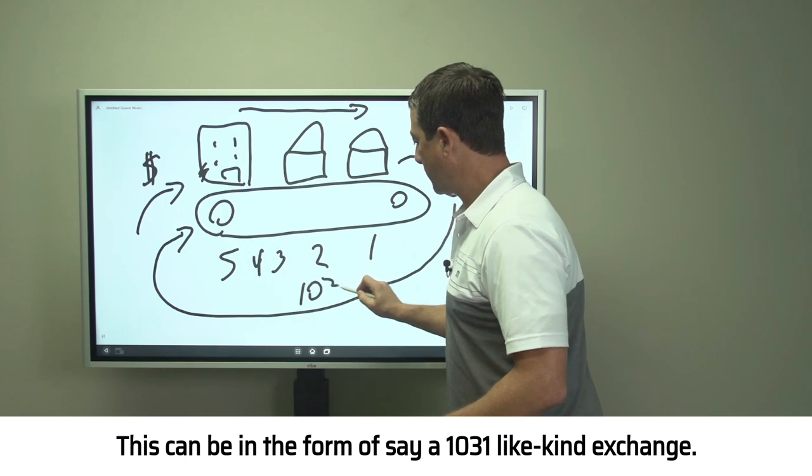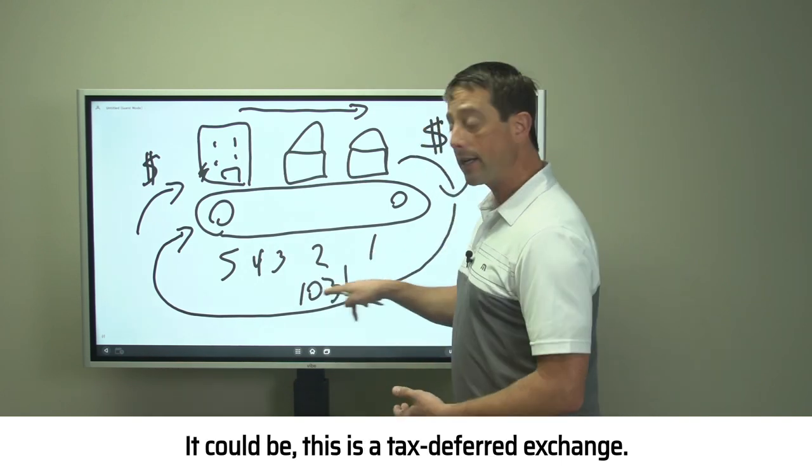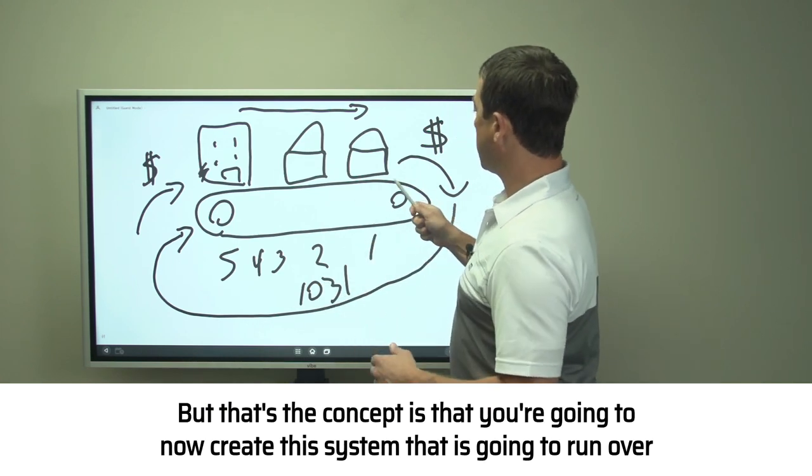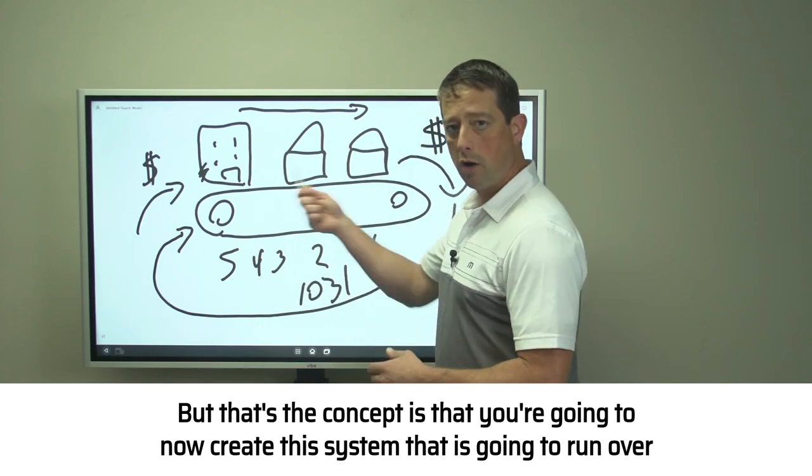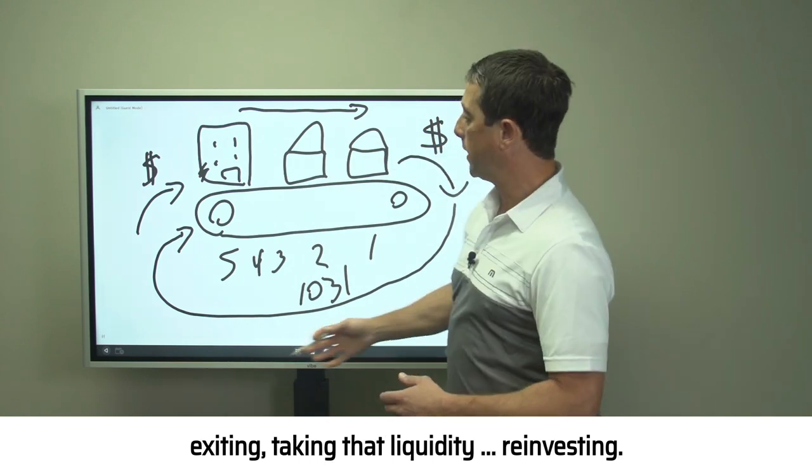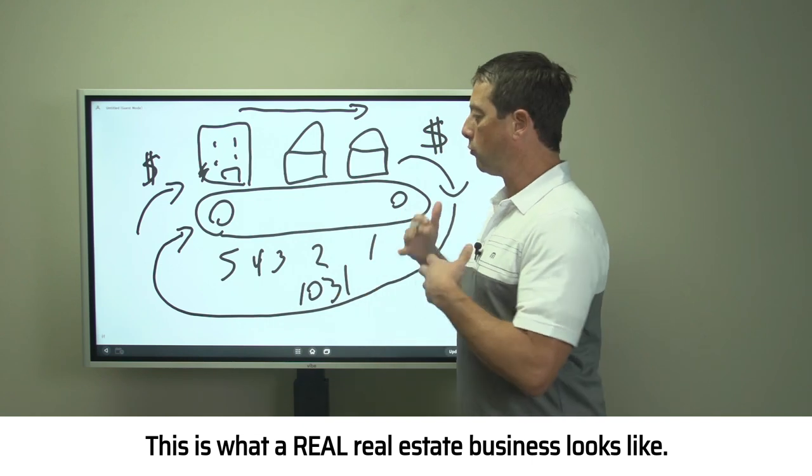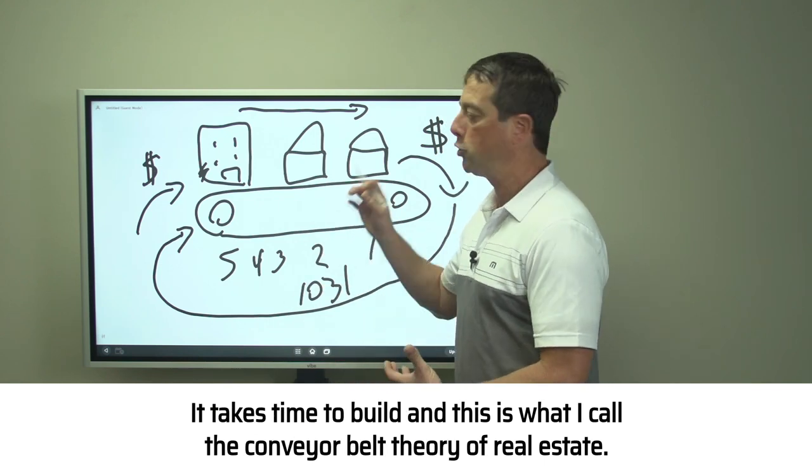Every time one of our properties comes off the back, we're rolling that capital gains to the front. This can be in the form of a 1031 like-kind exchange—a tax-deferred exchange. It could be in several different manners. But that's the concept: you're going to create this system that is going to run over and over. You're putting assets on, selling, exiting, taking that liquidity, and reinvesting.